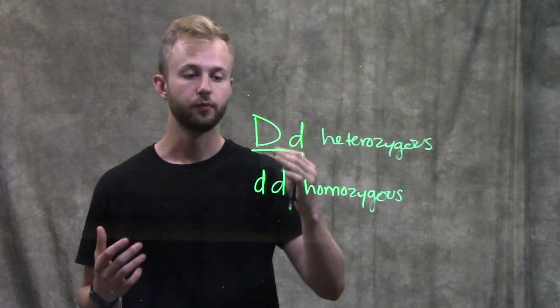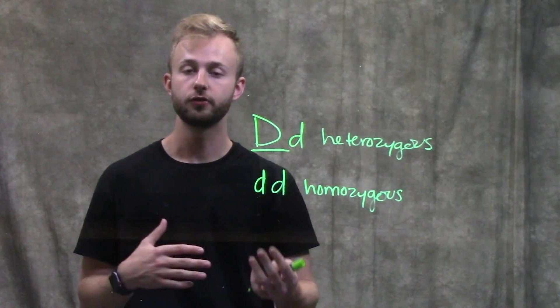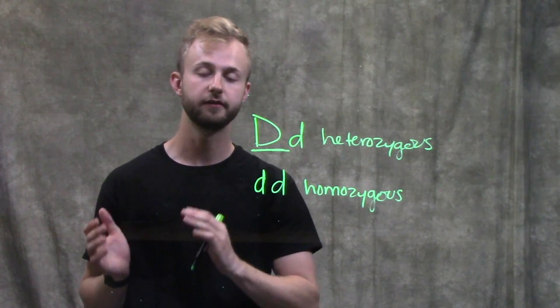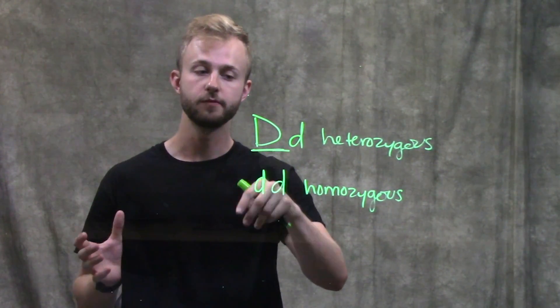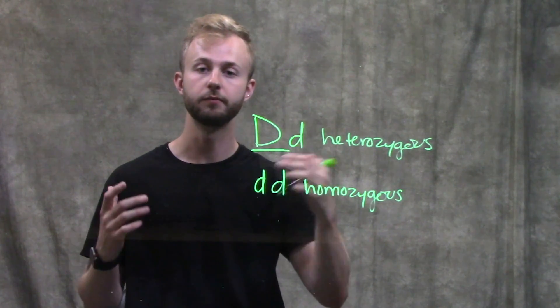In our bodies, we have two copies of each chromosome, which means we have two copies of each gene. The dominant allele would be on one chromosome and the recessive allele would be on another chromosome.